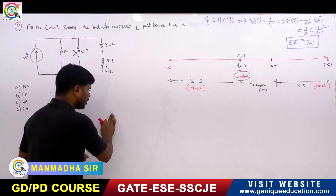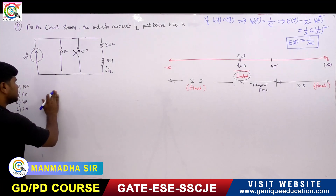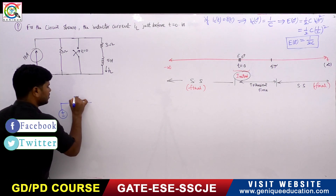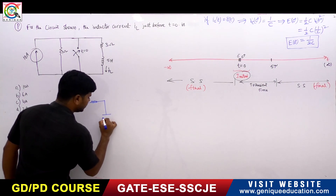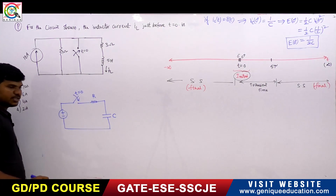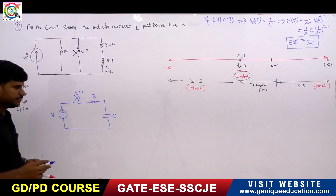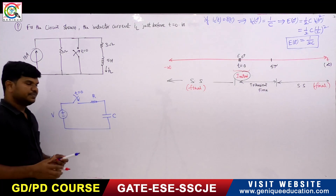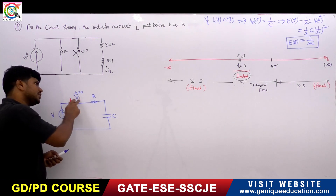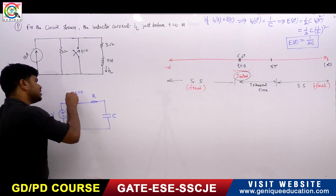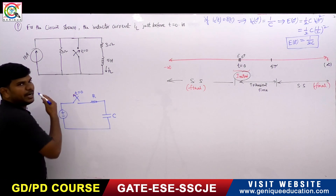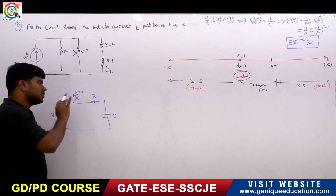Consider two kinds of circuits. Here a voltage source is connected to a switch, and through the switch it is connected to an RC circuit with resistor R and capacitor C. At T equals 0, the switching takes place. If the switch orientation has the arrow in this direction, at T equals 0 plus the switch is opened, and until T equals 0 the switch was closed.